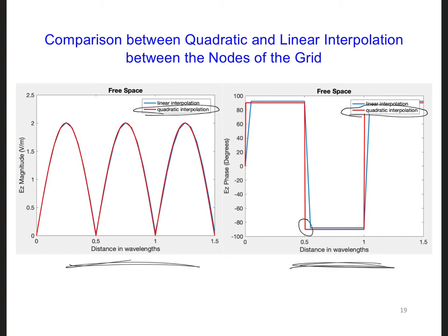For example, here, at a half wavelength and one wavelength, the phase changes more abruptly between being positive and negative for the quadratic elements.